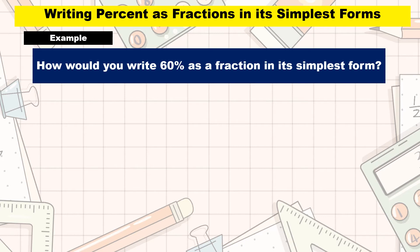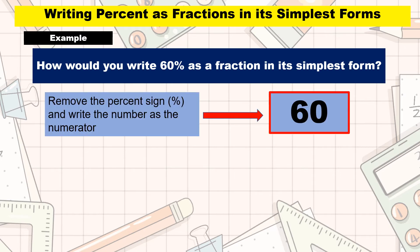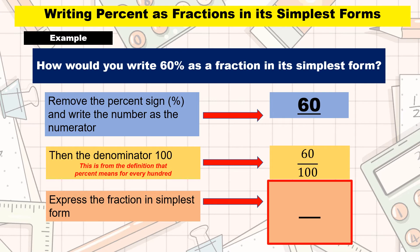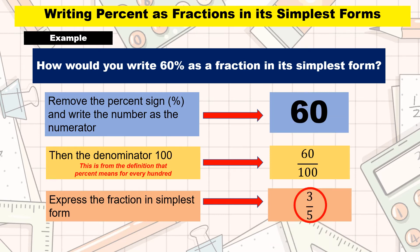Let us have another example. How would you write 60% as a fraction in its simplest form? First, remove the percent symbol, so what remains is 60. Then write this number as your numerator. Then use 100 as the denominator, so we will have 60 over 100, or 60 hundredths. And finally, reduce your answer to simplest form or lowest terms. The simplest form of 60 over 100, or 60 hundredths, is 3 over 5, or 3-fifths.